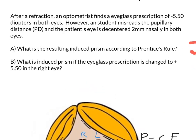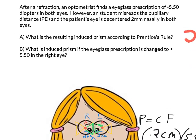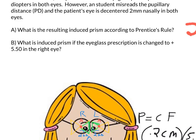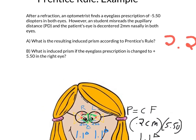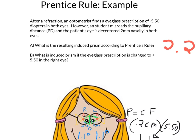For part B, I changed the power of the right eye to positive 5.50 in the right eye. I want you to try part B and see what you come up with. I'll post another video solving part B. Hopefully this helps.